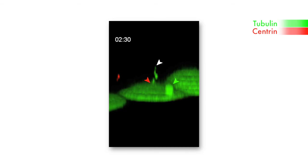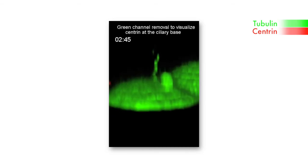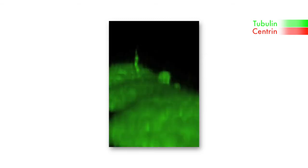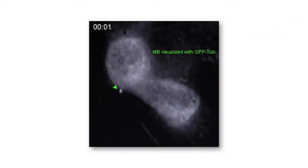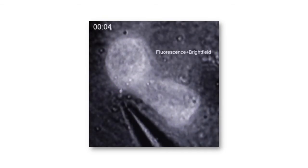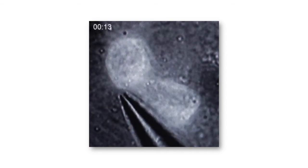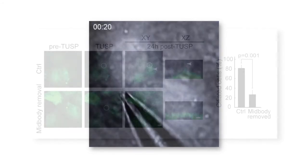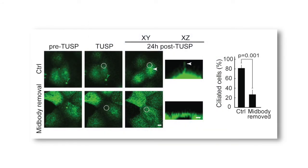To investigate whether the remnant is necessary for ciliogenesis, Bernabé-Rubio et al. first tried to destroy the structure by laser ablation, but the energy required caused too much damage to the rest of the cell. So they designed a new gentle procedure named TASP — take-up by suction pressure — which uses patch-clamp equipment to aspirate the remnant. Then, 24 or 44 hours later, they examined the cells for the presence of a primary cilium, and observed that removal of the remnant by TASP resulted in a fourfold reduction in the number of primary cilia relative to control cells.